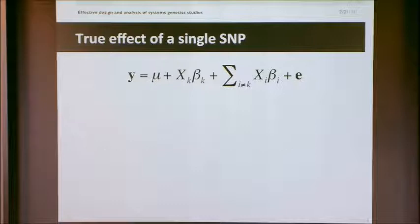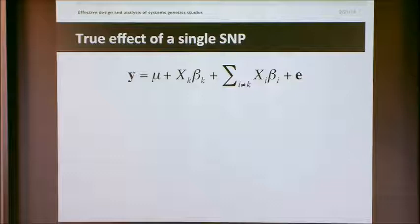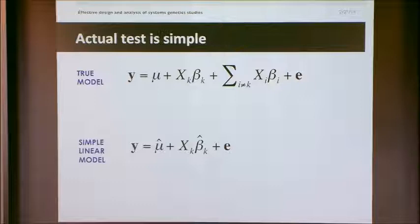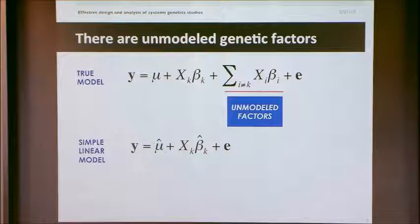Now let's look at testing a single SNP in the context of this model. When I'm doing a GWAS and my data comes from a model where many SNPs are associated, but I'm only looking at one SNP at a time — say SNP K — the other SNPs also have an effect, but my linear model ignores them. I'm calling these unmodeled factors. In many cases this isn't so bad, because these unmodeled factors will just increase the variance.